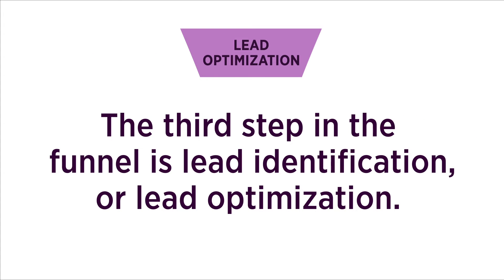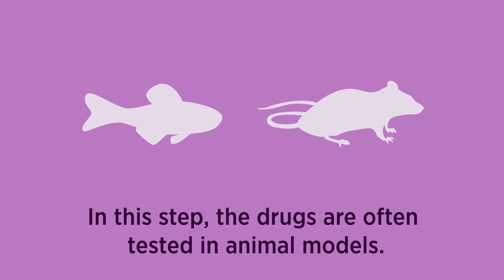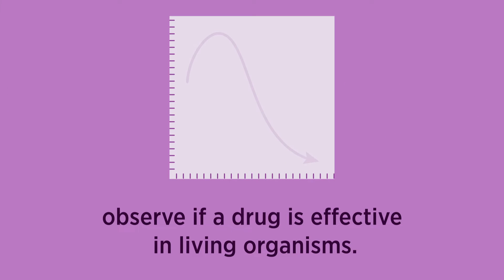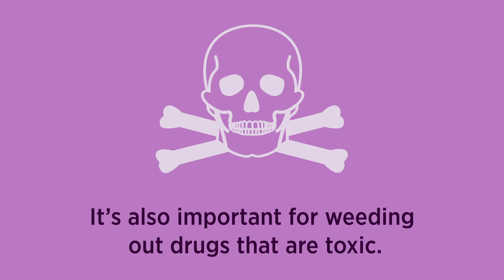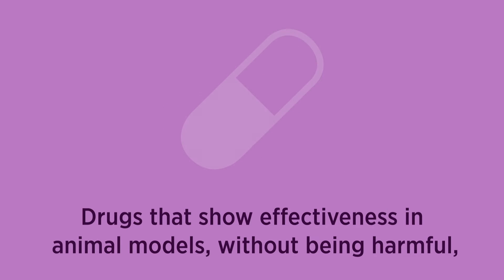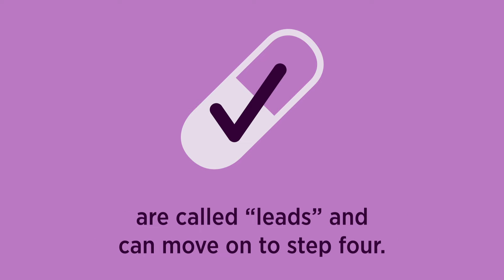The third step in the funnel is Lead Identification or Lead Optimization. In this step, the drugs are often tested in animal models. This is called in vivo testing, which allows researchers to observe if a drug is effective in living organisms. It's also important for weeding out drugs that are toxic. Drugs that show effectiveness in animal models without being harmful are called Leads and can move on to Step 4.